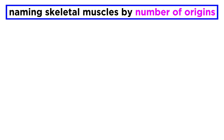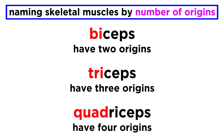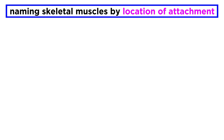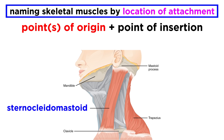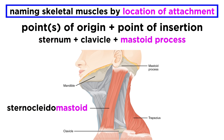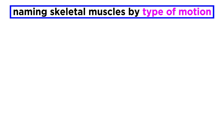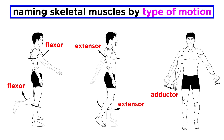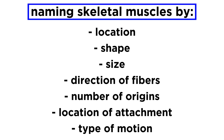Next we can consider the number of origins: biceps, triceps, and quadriceps have two, three, and four origins respectively. Then we can discuss the location where the muscle attaches to other structures — we list the point or points of origin followed by the point of insertion, such as with the sternocleidomastoid muscle, which has origins on the sternum and clavicle and inserts on the mastoid process. And lastly, we can name muscles according to the type of motion they produce, like a flexor, extensor, or adductor. With these criteria understood, we should have a reasonable capacity to know something about the function of a muscle from its name.